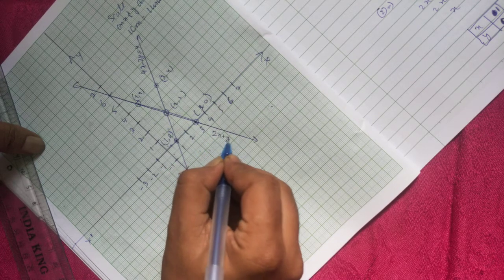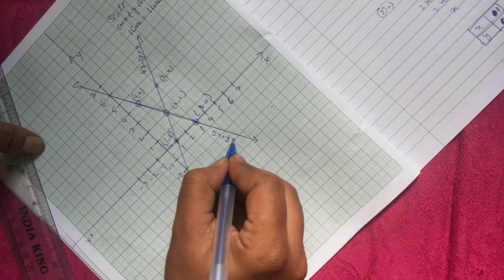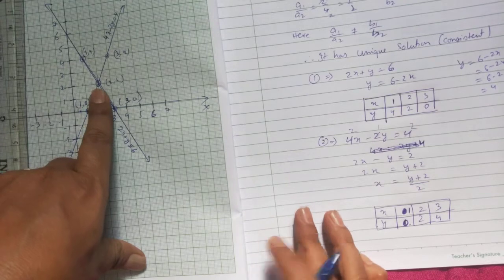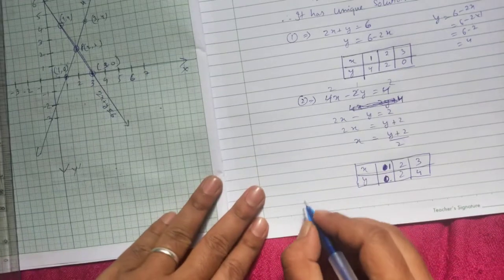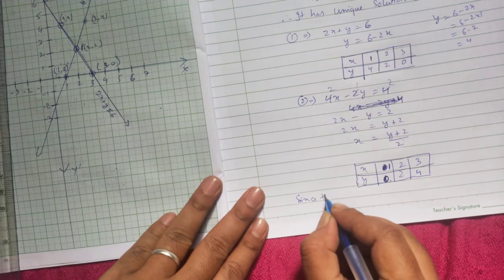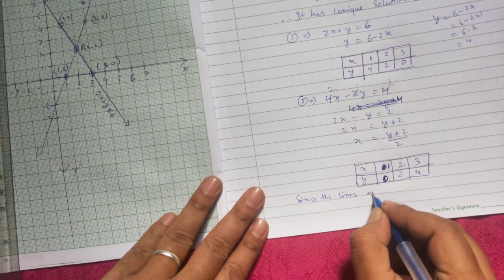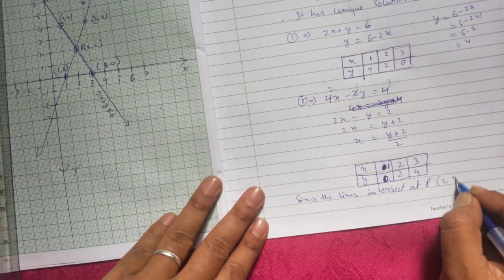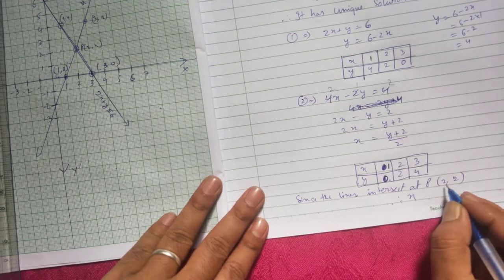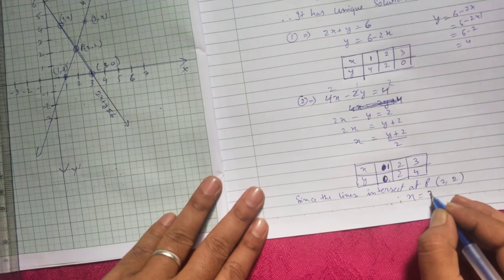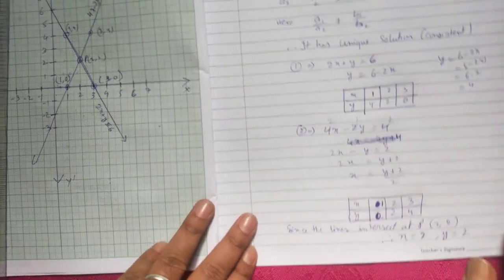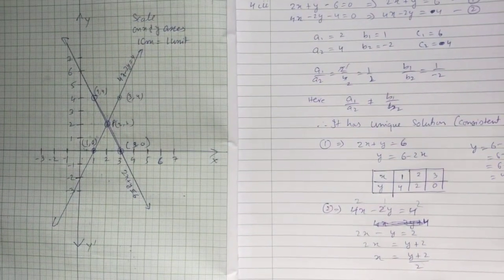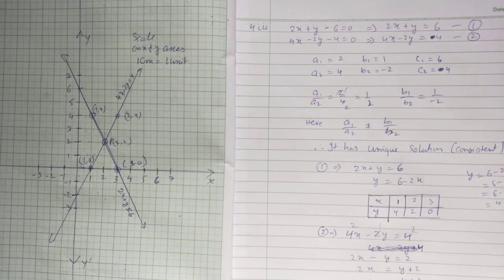Since the two lines meet at point P(2,2), therefore x=2 and y=2. You can pause the video to write the solution from the graph. Thank you.